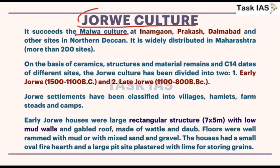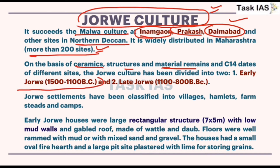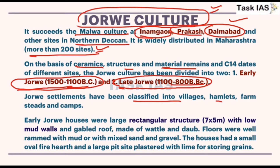Jorwa culture succeeds Malwa culture and is the youngest. Important sites are Inamgaon, Prakash, and Daimabad. It is widely distributed in Maharashtra, where more than 200 sites have been excavated. Based on ceramic structure, material remains, and C-14 dates, Jorwa culture has been divided into two phases: Early Jorwa (1500–1100 BC) and Late Jorwa (1100–800 BC). Jorwa settlements have been classified into villages, hamlets, farmsteads, and camps.